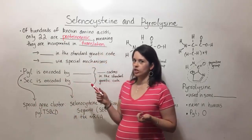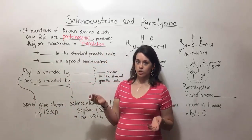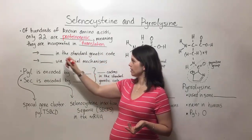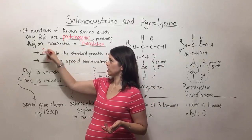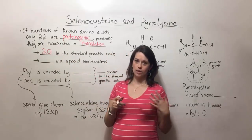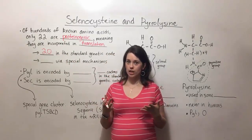Now of these 22, there are 20 that you're probably already really familiar with. Those are part of the standard genetic code, sometimes called the universal genetic code.